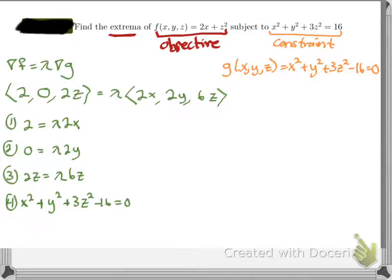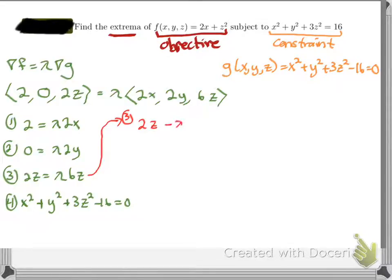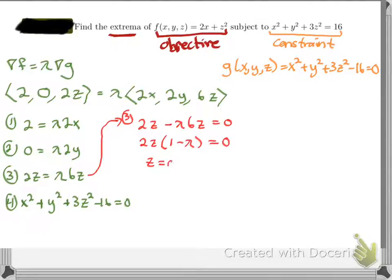We want to go through and start to solve these. Looking at the first three, equation 3 is the one that only has z on both sides, so I can factor it. I rewrite it as 2z − λ·6z = 0, factor out 2z, and get 2z(1 − 3λ) = 0. So I've got two solutions: z = 0 and λ = 1/3.